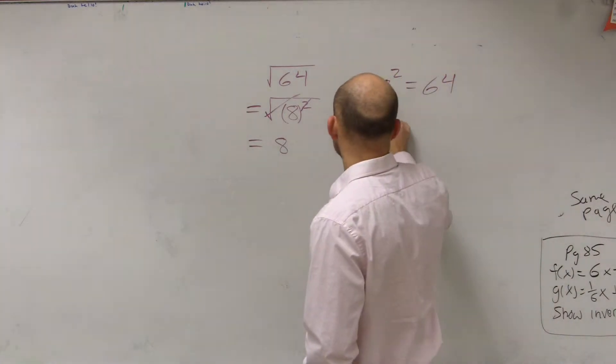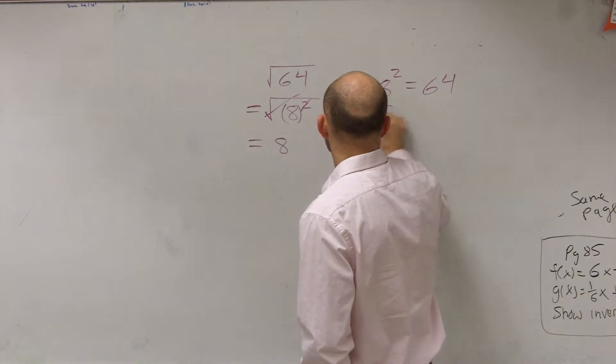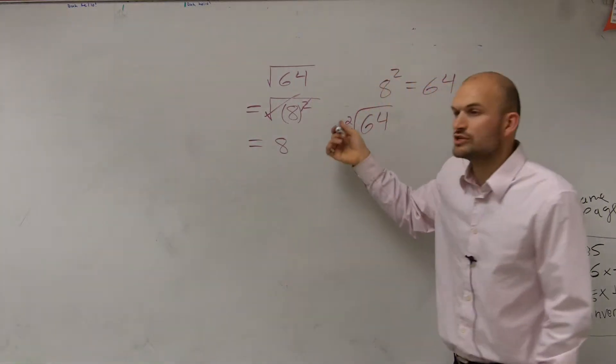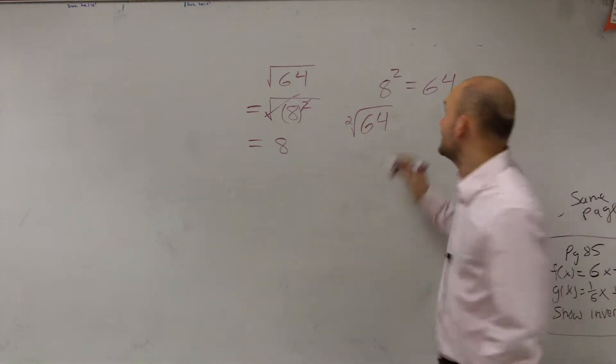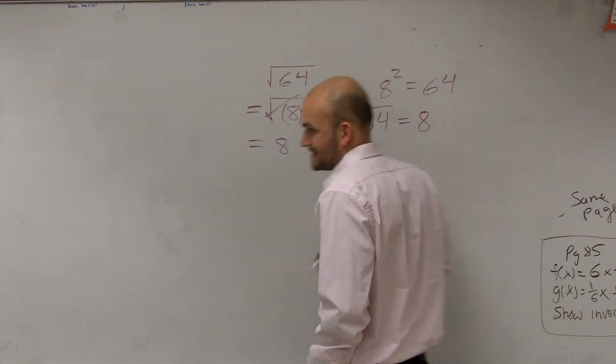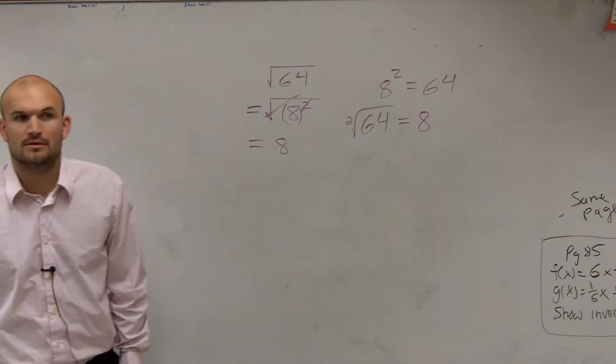What that means is, the other way you can think about it, is the square root - we usually don't write this 2 in there, but it's there - the square root of 64 equals 8.